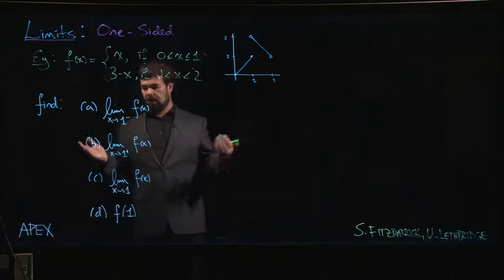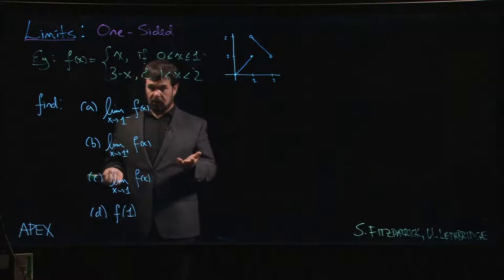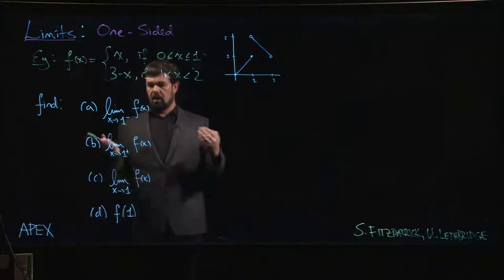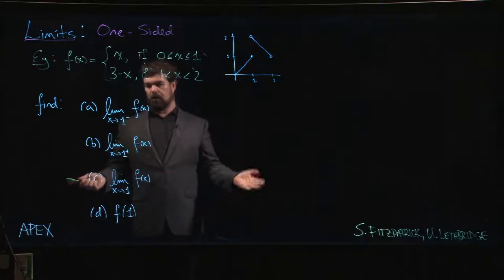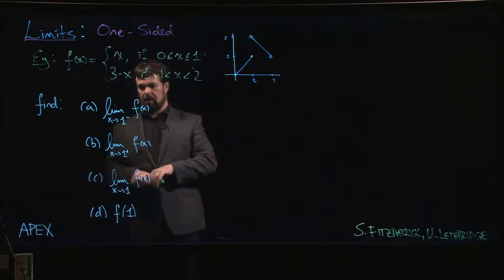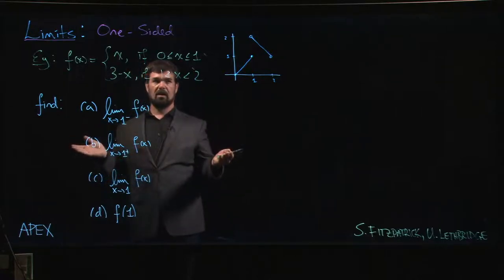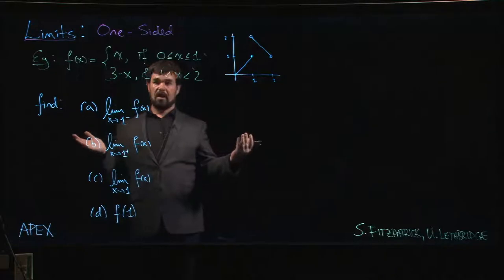And we know that if the overall limit exists, so do the one-sided limits, and they have to have the same value. So if you already know about the overall limit, there's no point in considering the one-sided limits.